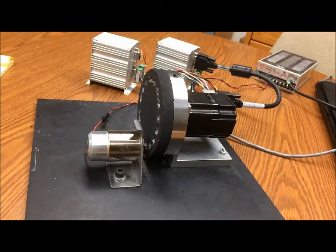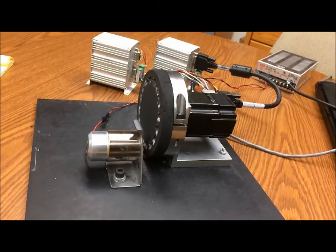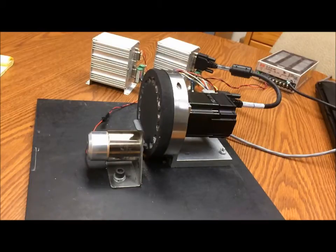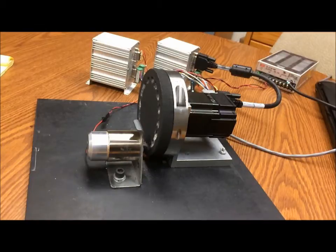The video shows a flywheel indexing 16 positions per revolution. At each index, the servo motor controller commands the voice coil controller via CAN open network to extend and retract. After the voice coil extends and retracts, the command is transmitted to the servo controller to indicate it's clear to rotate to the next index.